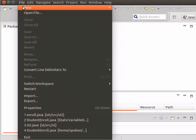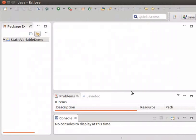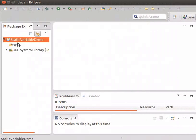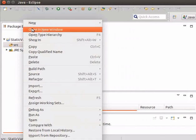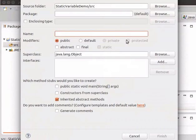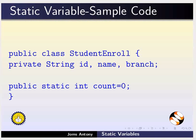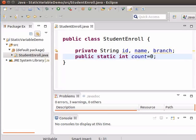Now we will switch to Eclipse and create a new project called static variable demo. Inside this project we will create the necessary classes to demonstrate the usage of static variables. So right click on src folder and click on new class and type the name of the class as StudentEnroll and press enter.